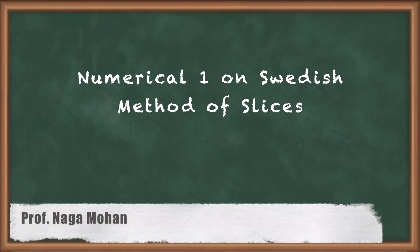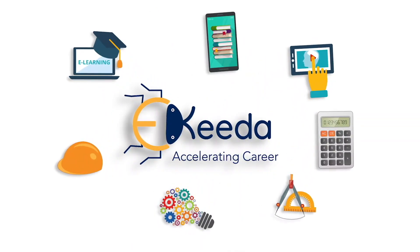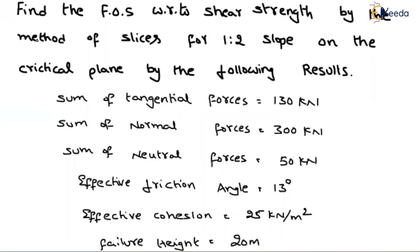Hello friends. In the present video, let us solve an example based on the Swedish slices method. First of all, read the problem. What is given in the question? Find the factor of safety with respect to the shear strength by the method of slices for a one-is-to-two slope on the critical plane using the following results. We have to use the method of slices to find the factor of safety with respect to shear strength.